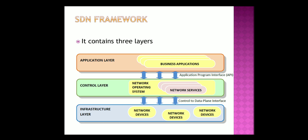The next topic is the SDN framework. The SDN framework consists of three layers. The first layer is the application layer, where SDN applications reside. The applications convey their needs for resources and services to the control layer through the application interface. The next layer is the control layer, where the network control software, bundled into the network operating system, lies. It provides an abstract view of the underlying network infrastructure and receives the requirements of the SDN application and relays them to the network components.